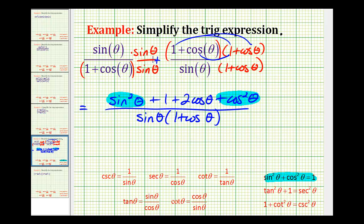Let's rewrite this again. The highlighted part is one plus another one, so we'll have two plus two cosine theta over sine theta times one plus cosine theta.